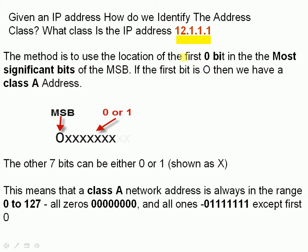The method we use is to find the location of the first zero bit in the most significant byte. The most significant byte is the one on the left — so here, 12, is the most significant byte. We convert this into binary and look for the first zero. If the zero appears as the first binary number, then it's a class A address — zero plus anything is a class A address. Converting back, we can have a range from all zeros to zero plus all ones, which gives 127. So a class A address has a range of 0 to 127, and this address here, 12.1, is between 0 and 127, so it's a class A IP address.